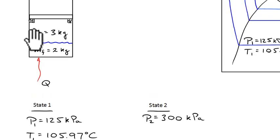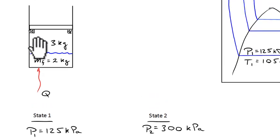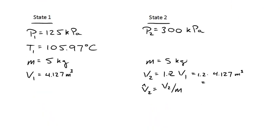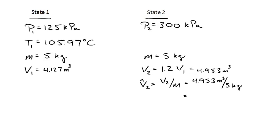That's the total volume of liquid and vapor beneath the piston before it starts rising. Since V2 is 20% bigger, V2 = 4.953 cubic meters. The specific volume at state 2 is then V2 divided by the total mass: 4.953 / 5 = 0.9905 cubic meters per kilogram.